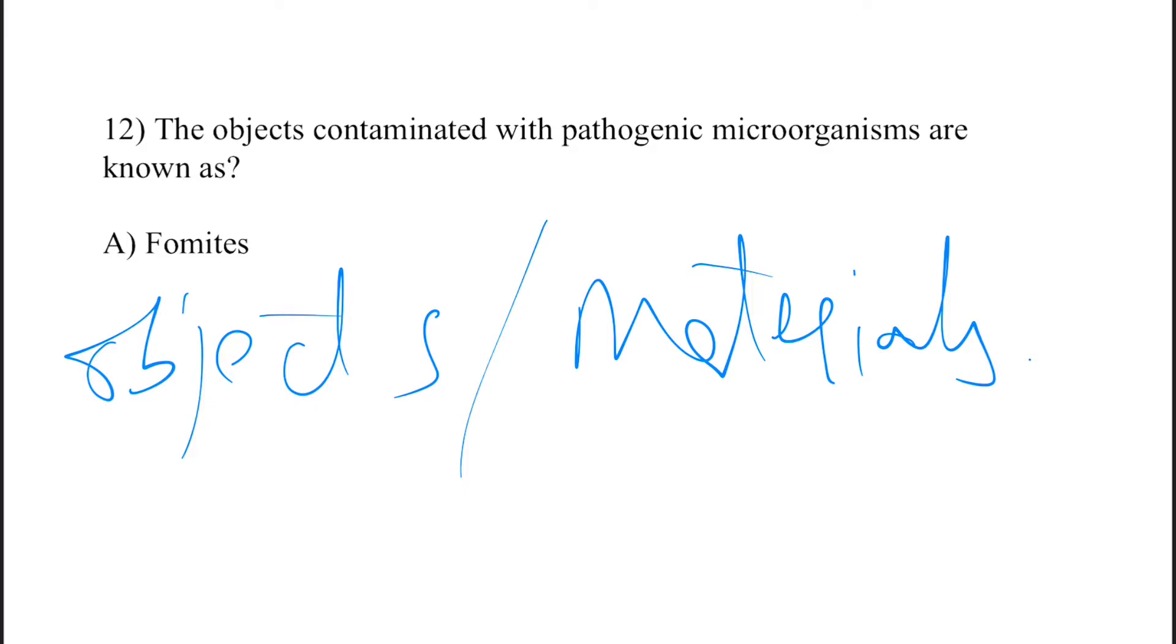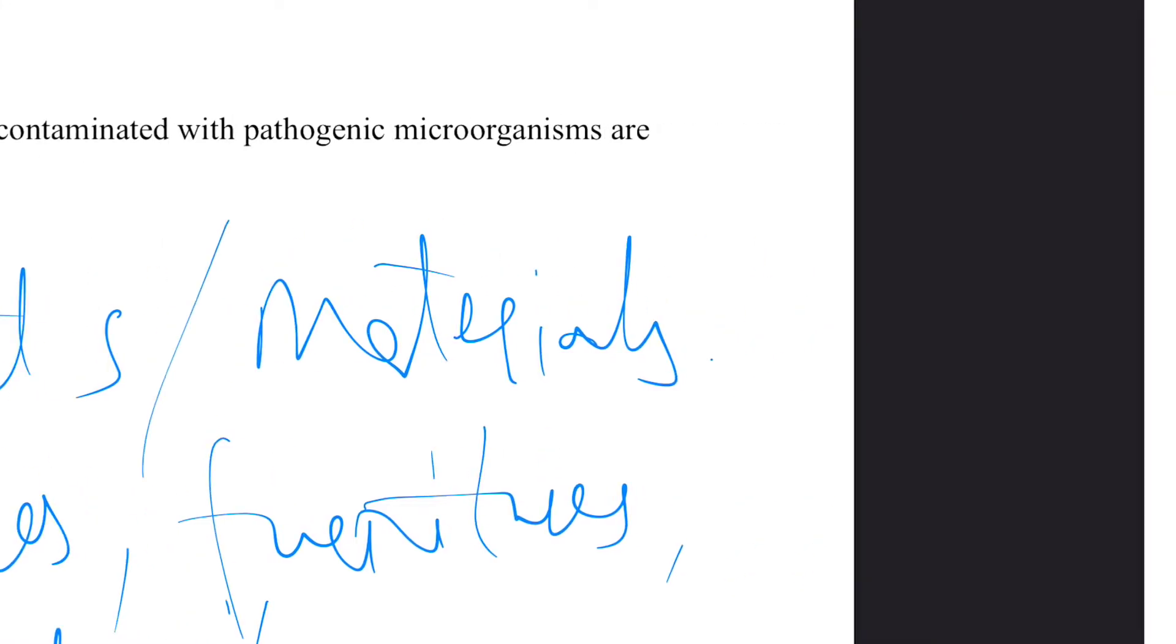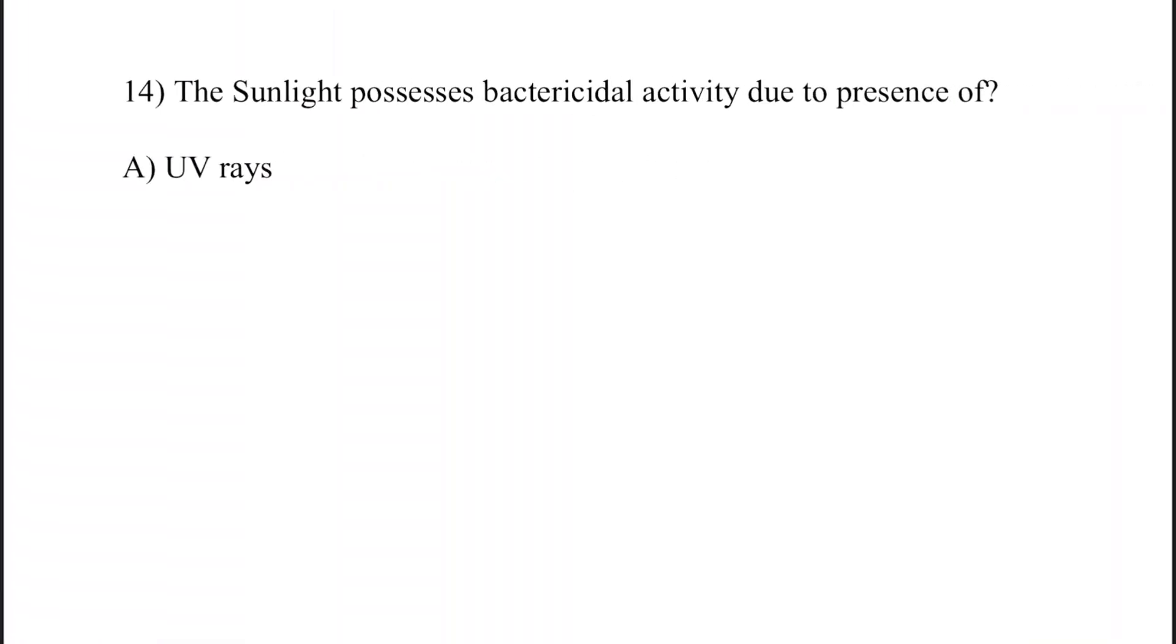furniture, and utensils. These examples act as fomites, meaning the source of infection due to the presence of pathogenic microorganisms.